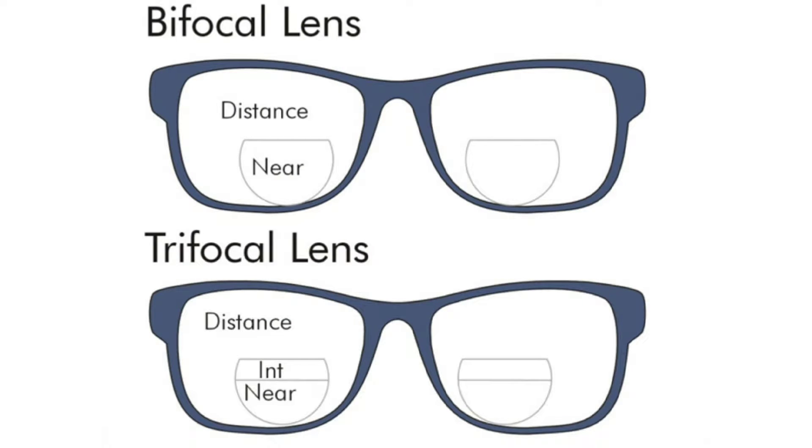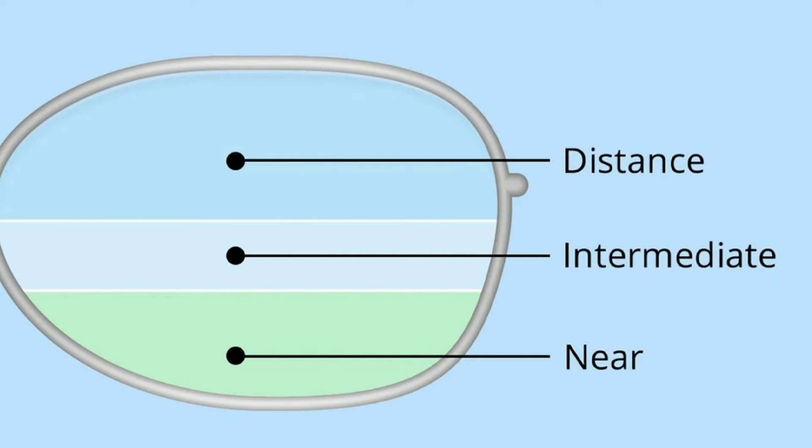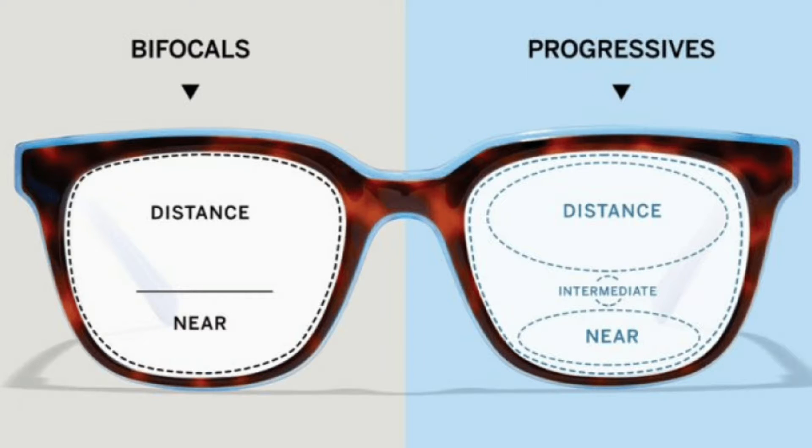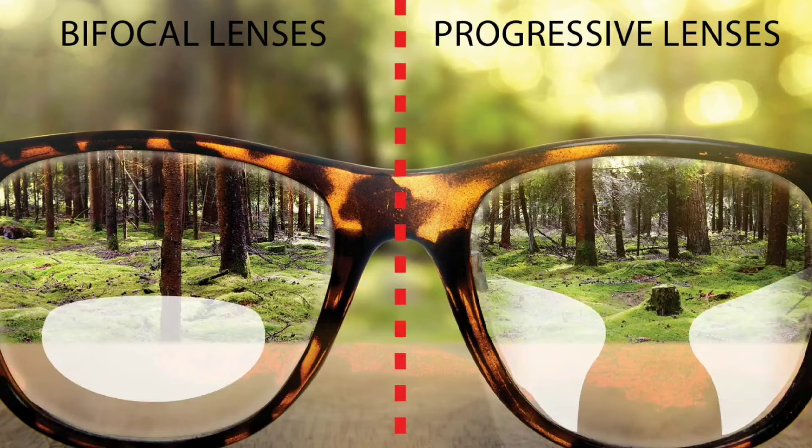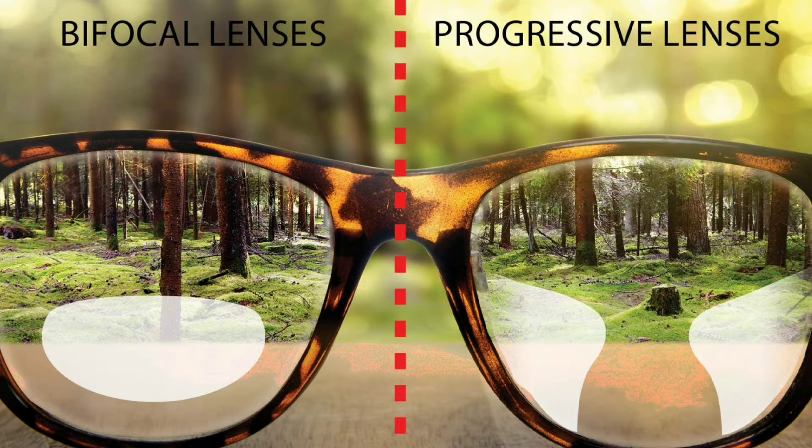Trifocals are the same thing, but with a top section that bends light slightly less for looking at things far away. Progressive lenses have the same three sections as trifocals, but they smoothly transition between them across the lens.